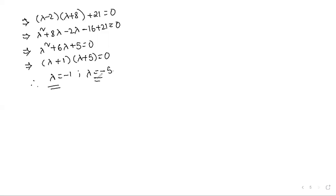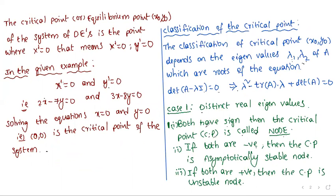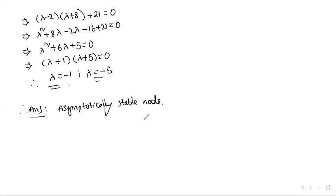Both eigenvalues λ₁ = -1 and λ₂ = -5 have the same sign (both negative), so by Case 1, the critical point is a node. Since both are negative, the critical point (0, 0) is an asymptotically stable node. Therefore, the answer is option 1: asymptotically stable node.